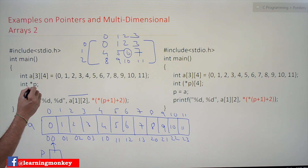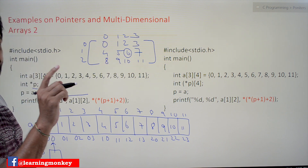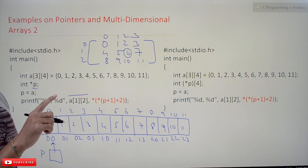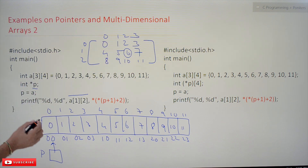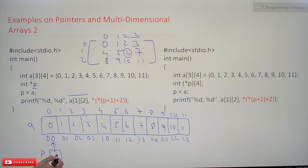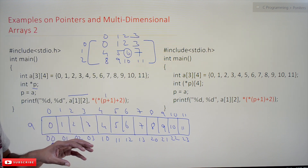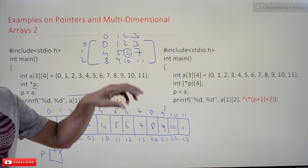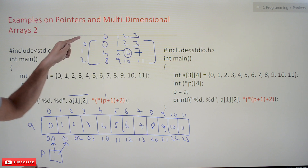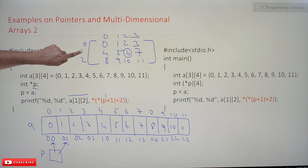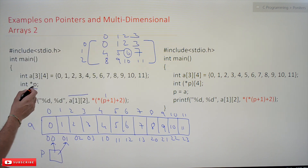The key point to understand here is that P is an integer pointer — P is pointing to an integer. So what happens with P+1? P is pointing here, and P+1 means it will go to the next location. Star-star of (P+1) means it is going to be treated as an integer value. It will not be considered as a two-dimensional array. For a two-dimensional array, P+1 should mean moving to the second row, but here it is acting like an integer because it is an integer pointer.